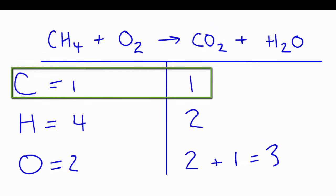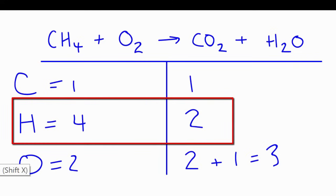So the carbons are balanced, we don't need to do anything with that. Let's take a look at the hydrogens. If I were to put a two right here, that would mean I would have two times two, that would give me a total of four hydrogens. Now the hydrogens are balanced.